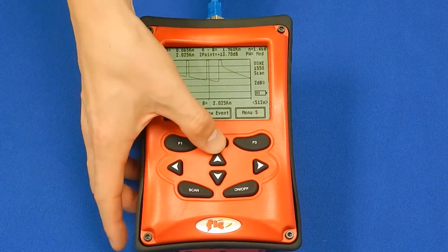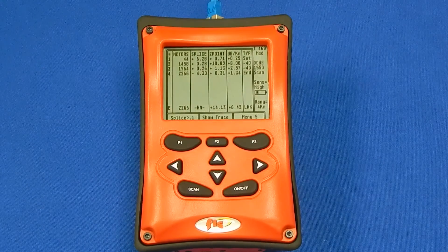Menu five will show you the event table for a full trace breakdown of the events on the fiber.